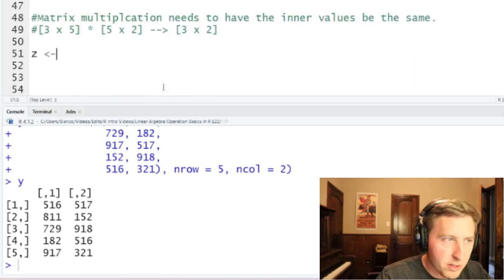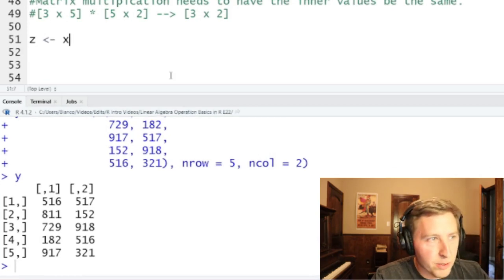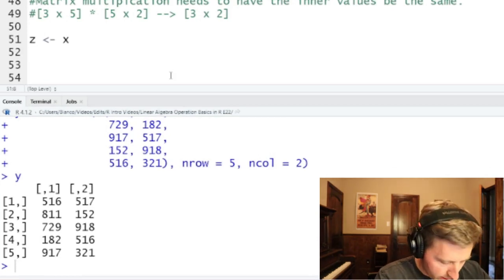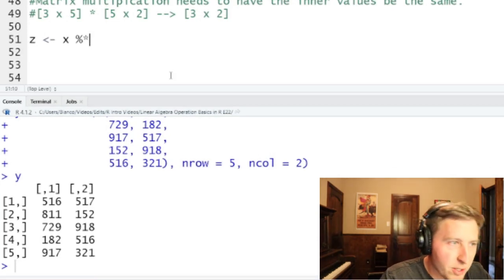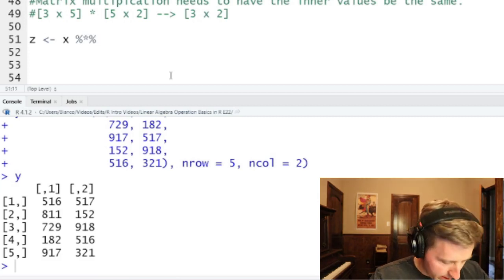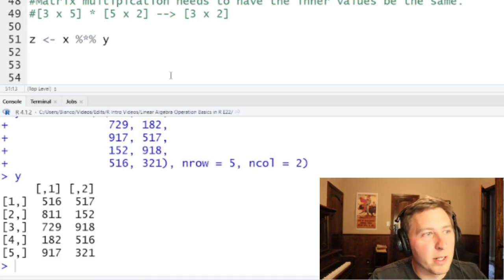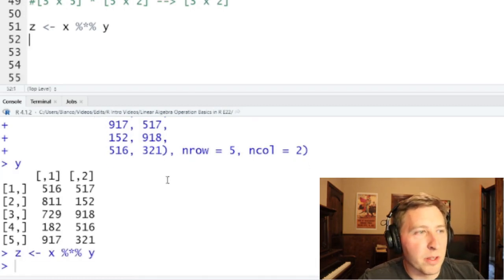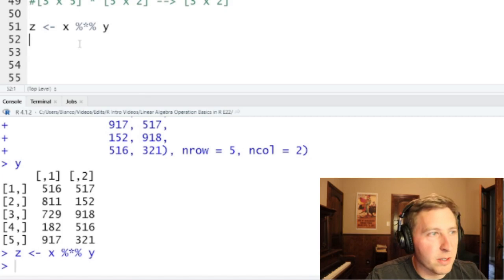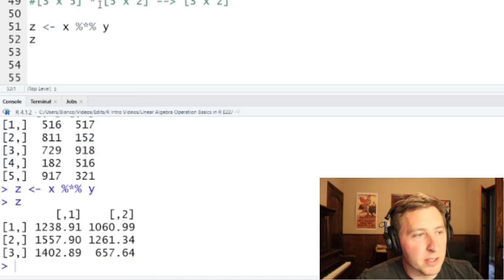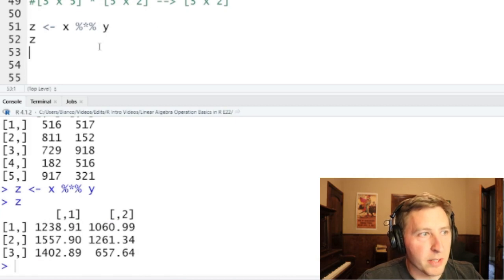And to do this we're going to create z. And all you need to do is do x, then you do percentage sign, multiplication which is the star, percentage sign again, and then do y. And this is how you do matrix multiplication. And you run this and this gives us z. And we print this, and this is going to give us as I mentioned a three by two. So three rows by two columns. It does give us three by two. And that is the correct answer.